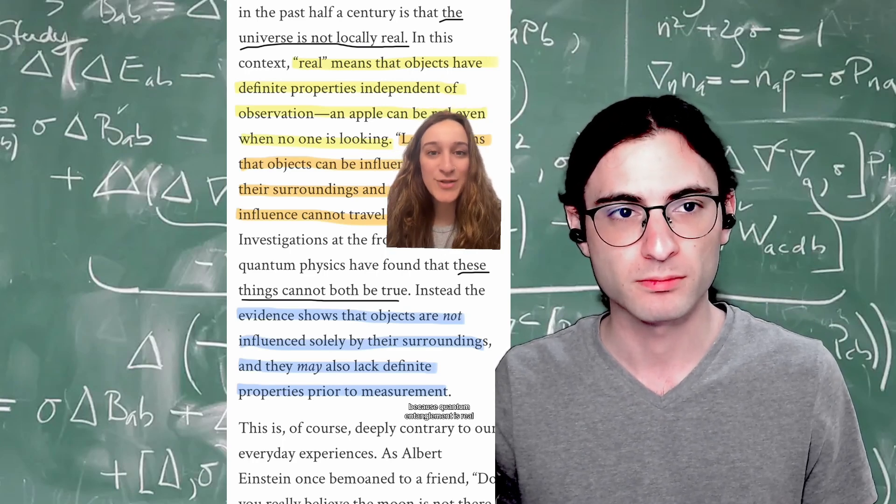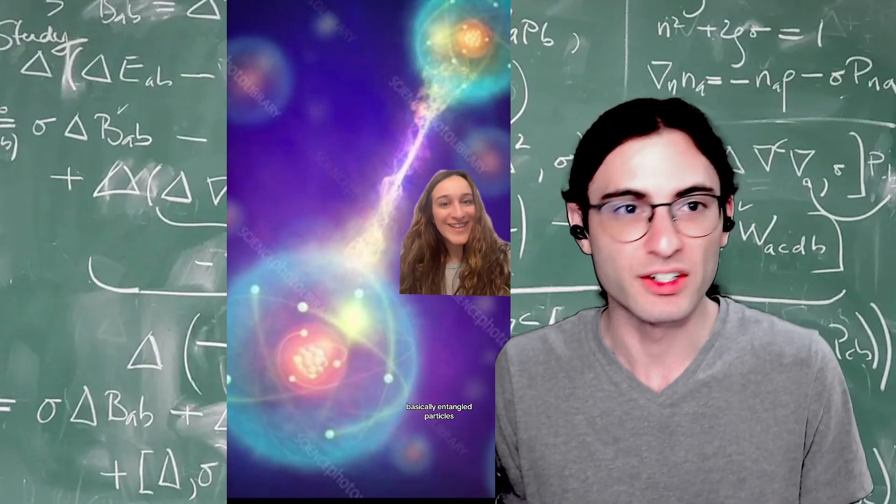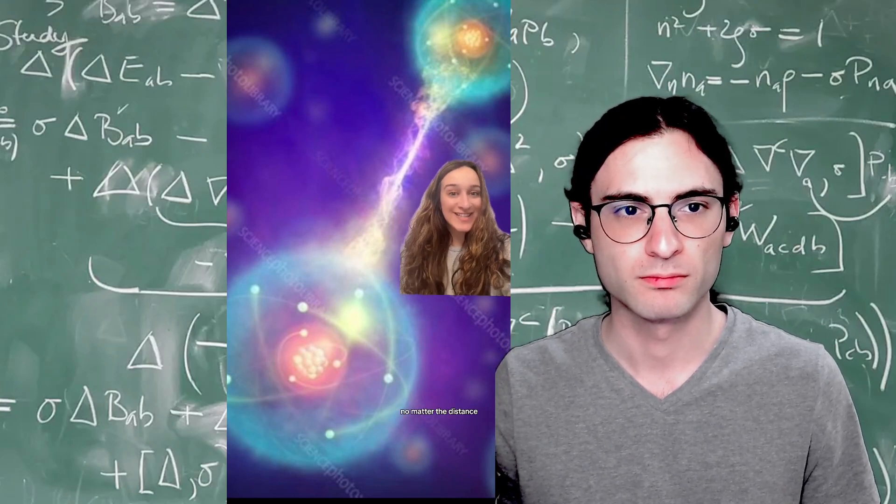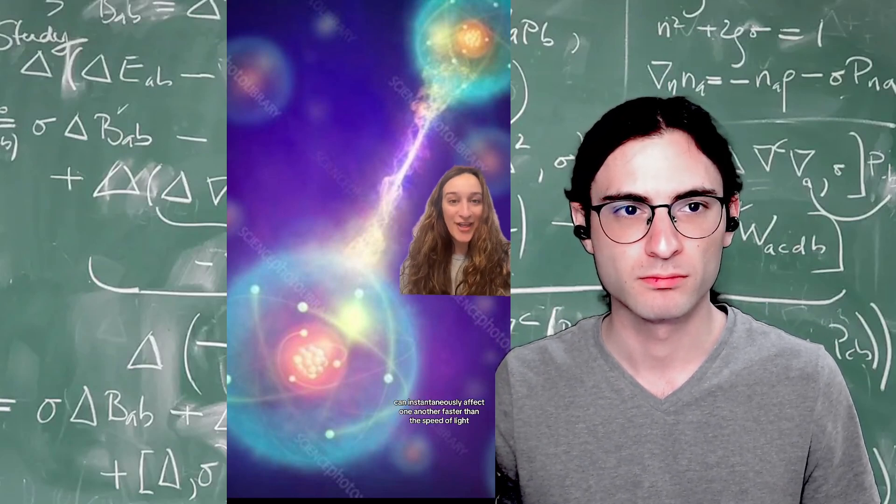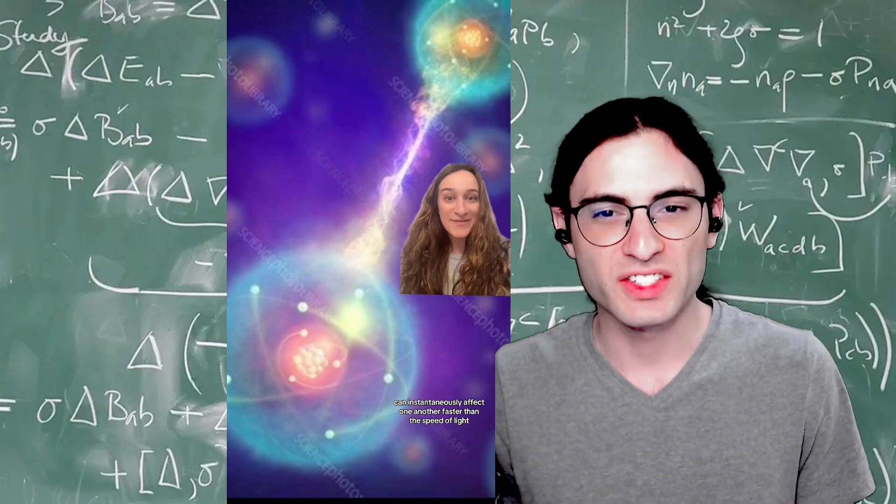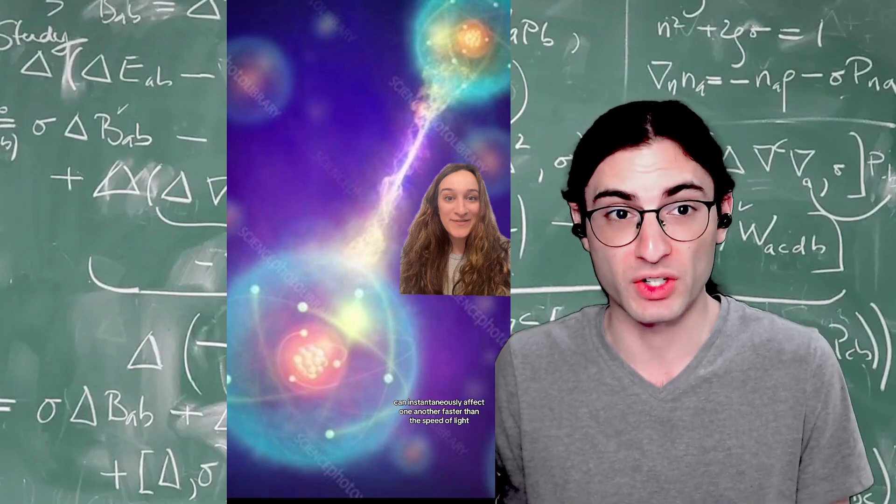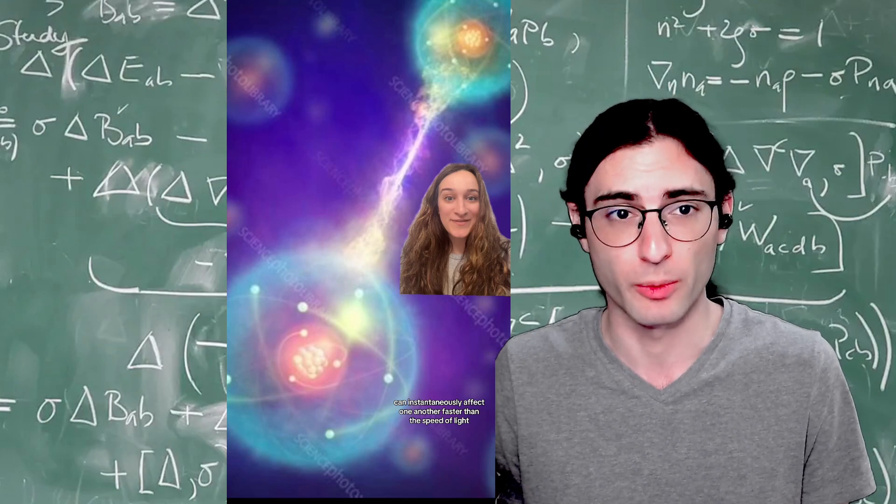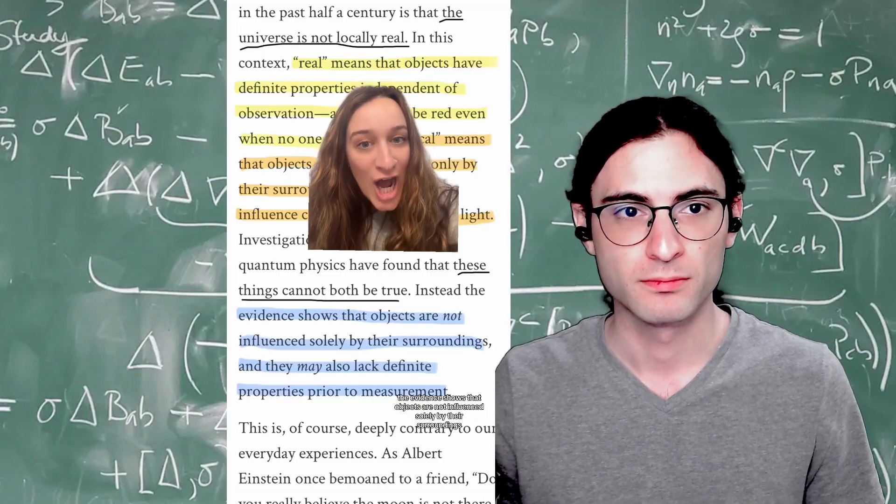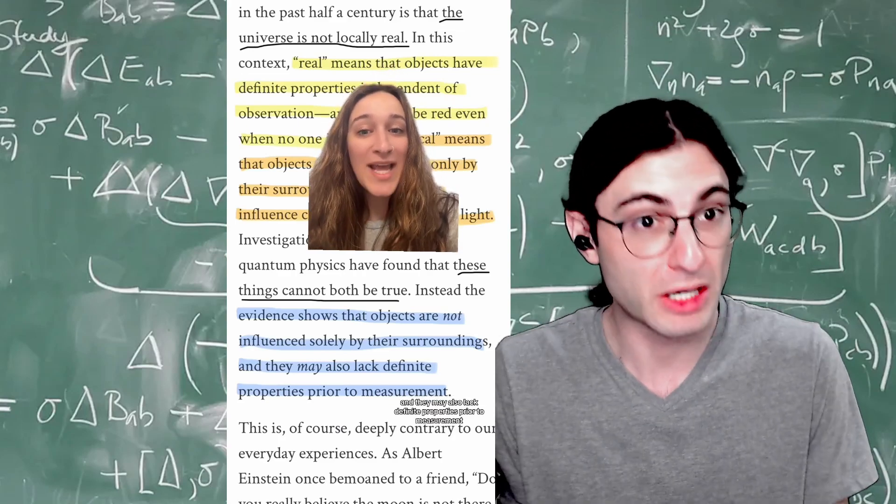Because quantum entanglement is real, so it violates this. Basically, not quite. Again, you need those two critical assumptions. Particles, no matter the distance, can instantaneously affect one another faster than the speed of light. Again, they don't necessarily instantaneously affect one another unless you make certain critical assumptions. For example, the many worlds interpretation is entirely local and entirely real. The evidence shows that objects are not influenced solely by their surroundings and they may... Again, assumptions being made.